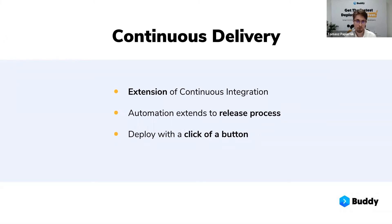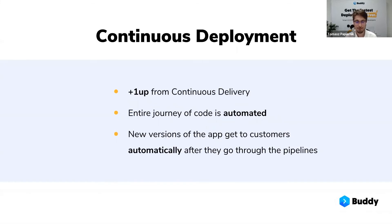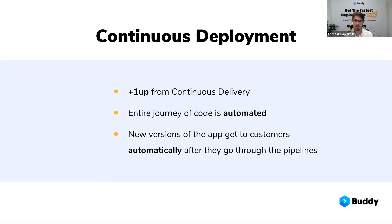And then finally, the third of the trio — continuous deployment — which takes this entire idea one step further. The entire journey of code from writing it, to automated tests, has been automated in the previous two instances, but continuous deployment automates the deployment as well. So provided your changes don't break anything and pass all the automated tests defined in your project, your application gets to production very, very quickly. So that's the three concepts behind the two abbreviations.